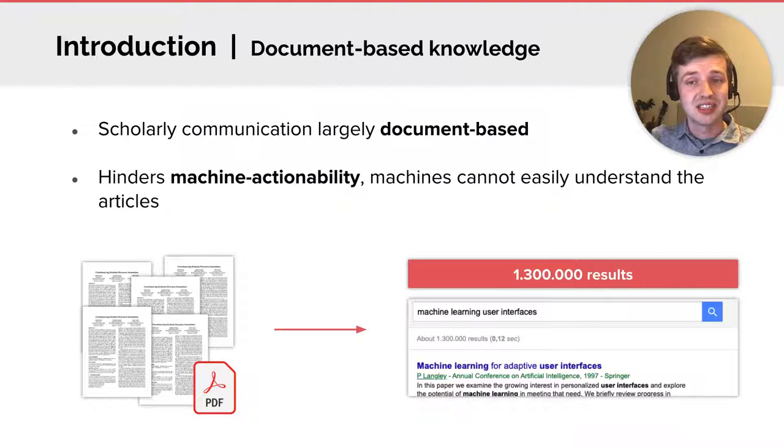Scholarly communication is largely document-based. For example, when reading articles we are often faced with PDF files. While document-based communication generally works fine for humans, it's created for human consumption after all, machines cannot easily parse the contents. Or in other words, the articles are not machine-actionable.